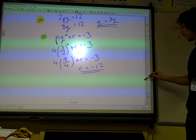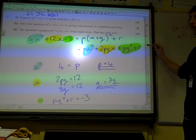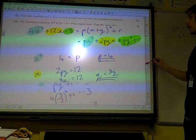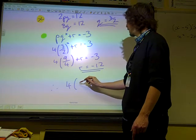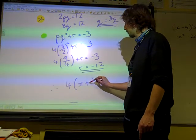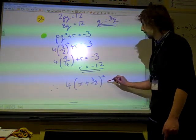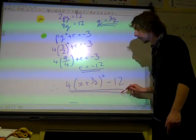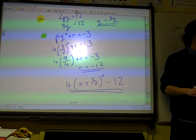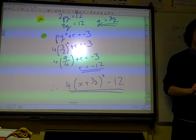There we go. Now what did the question want? It wanted it written in the form px plus q squared plus r. So we're going to finally write it as being 4 times x plus 3 over 2 squared minus 12. Are we happy with that? Do we agree with that? Great.